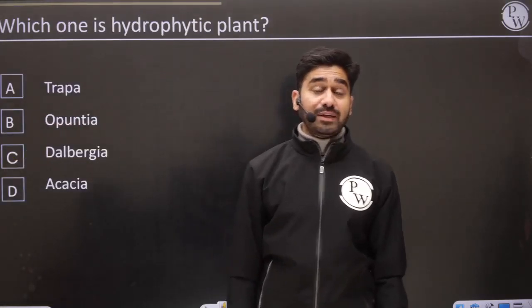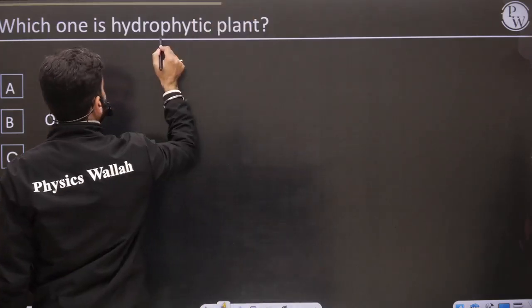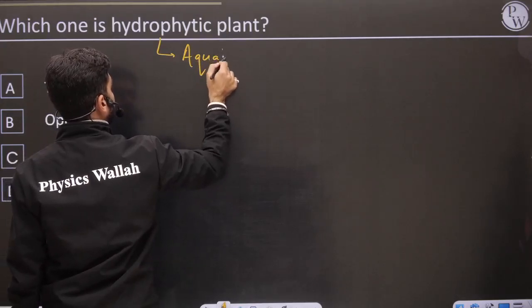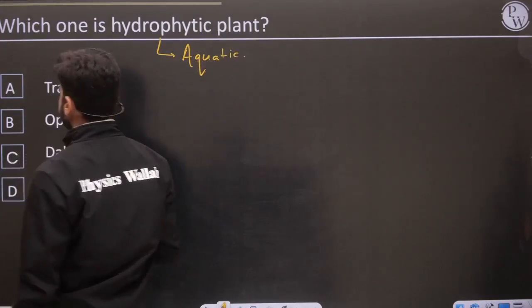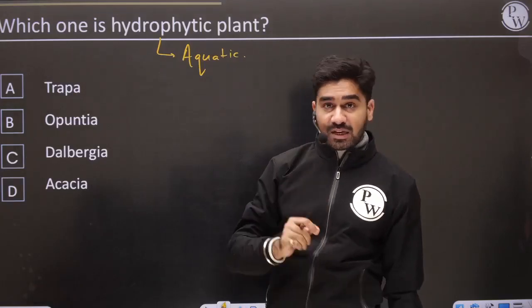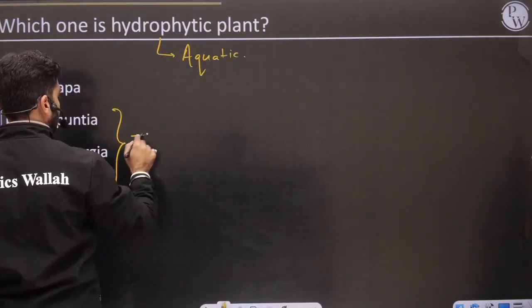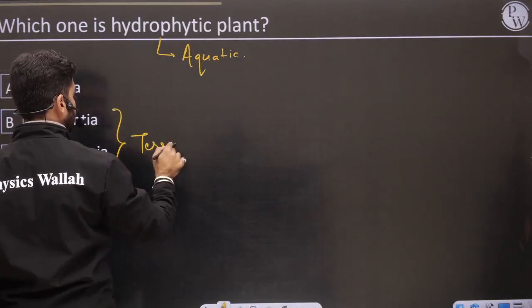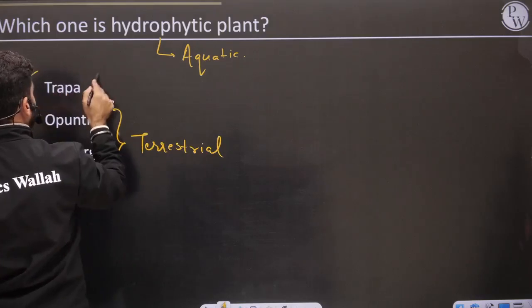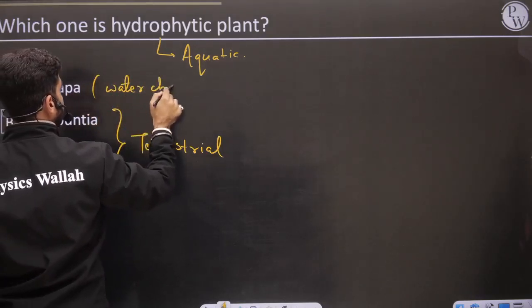Which one is hydrophytic? Hydro means water — they are asking which of the following is aquatic. Punshia, Dalbergia, Acacia — all of these are terrestrial plants. Trapa is the water chestnut — it is the aquatic (hydrophytic) plant.